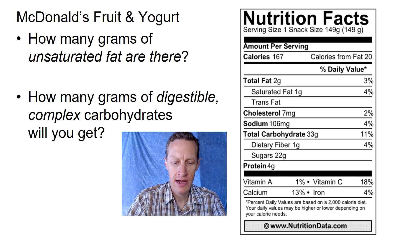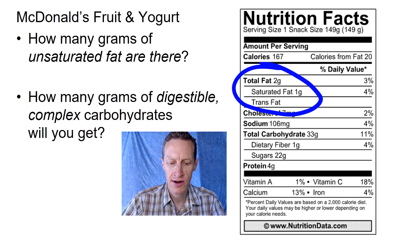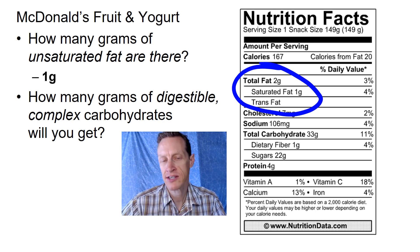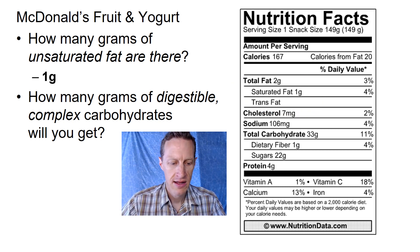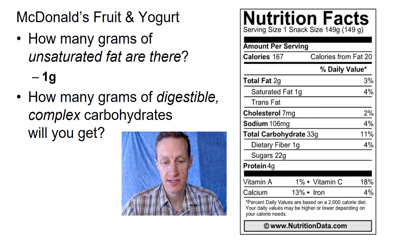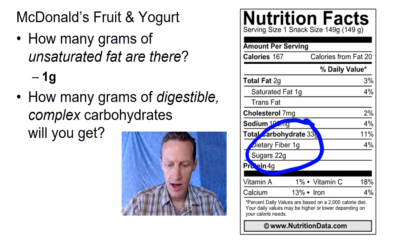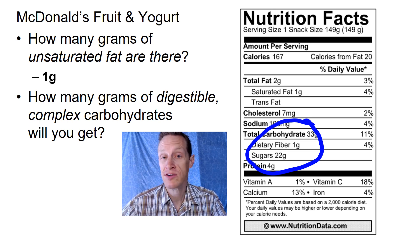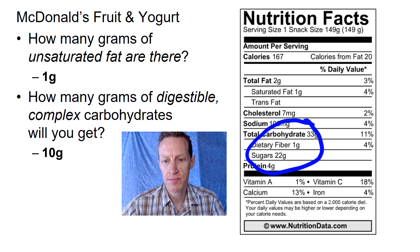Okay, so hopefully you were able to work that out. We have 2 grams of total fat in our yogurt, and 1 gram of that is saturated. Simple subtraction leaves you with 1 gram of unsaturated fat. For the second question, we have 33 grams total, but in that 33 grams are 22 grams of sugar and 1 gram of fiber. If we subtract those 23 combined from the total, we get 10 grams of complex carbs.